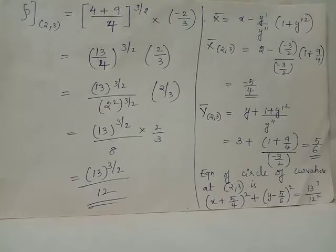Similarly, we have ȳ equals y plus (1 plus y' squared) divided by y double dash. Here in this equation, when you give y equals 3, y' equals negative 3 by 2, and y double dash equals negative 3 by 2, you obtain ȳ at point (2,3) as equal to 5 by 6.